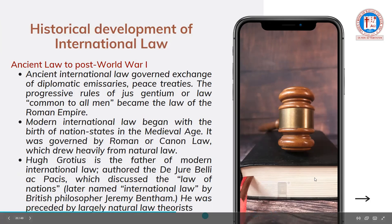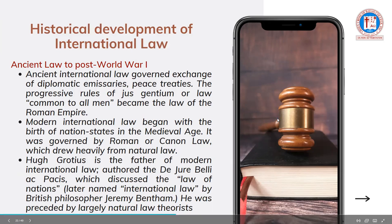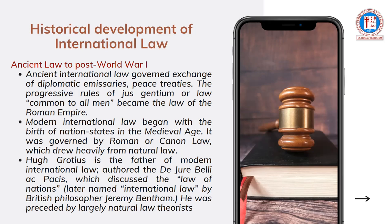Let's also talk about the historical development of international law. During ancient international law, it governed exchange of diplomatic emissaries, peace treaties, and progressive rules of jus gentium — the law common to all men — which became the law of the Roman Empire. The modern international law began with the birth of nation-states in the medieval age, governed by Roman and canon law drawing heavily from natural law. Grotius, the father of modern international law, authored De Jure Belli ac Pacis, which discussed the law of nations, and it was later named 'international law' by British philosopher Jeremy Bentham.